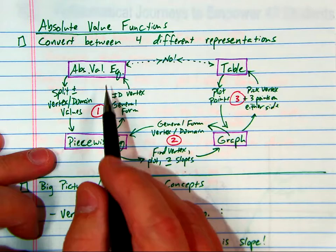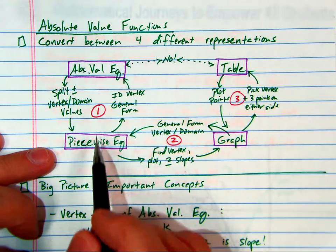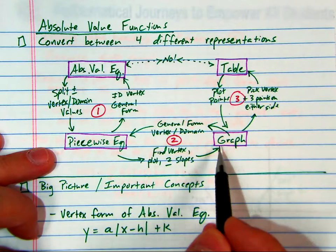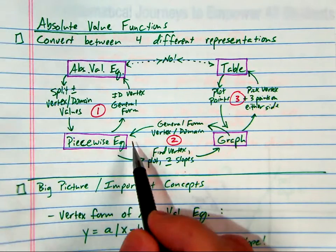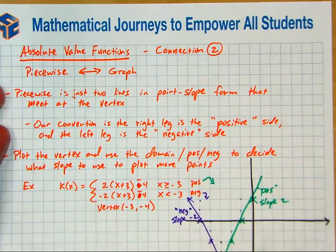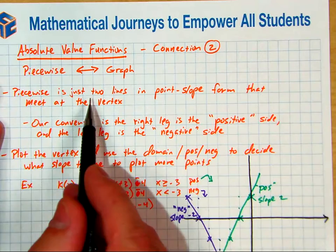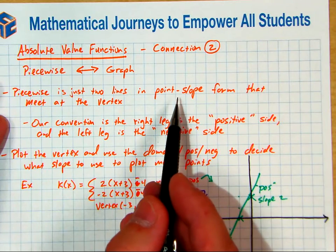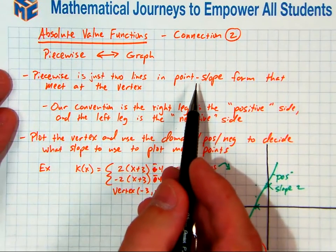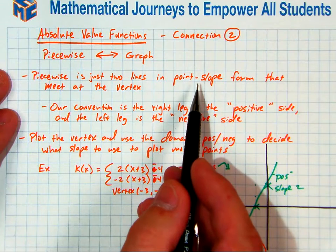If you get absolute value, always go to piecewise before you try to graph it because it's much easier to do this way. So piecewise again is just the two lines in point slope form. If they're not in point slope form, we're going to have to convert them, and we have other work to do if it's not in point slope form.